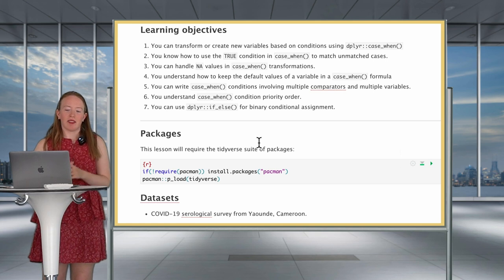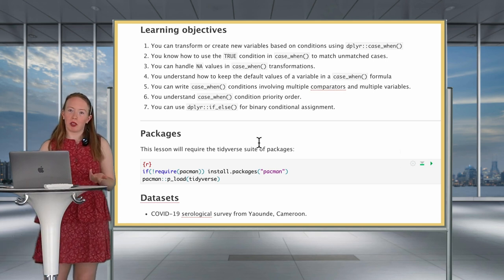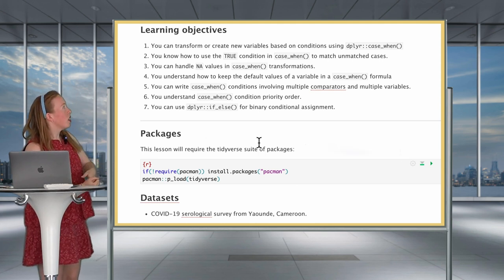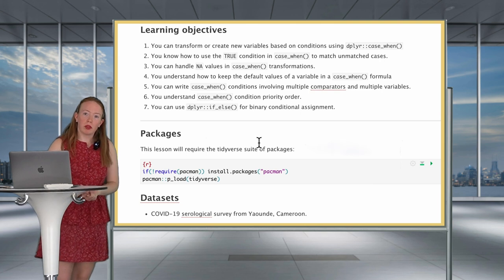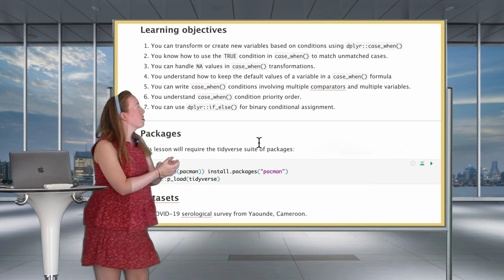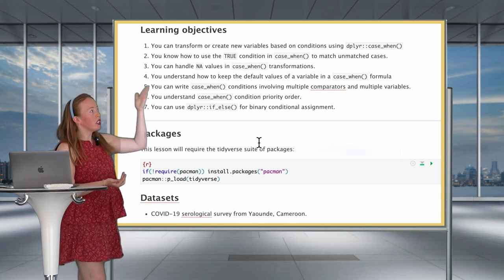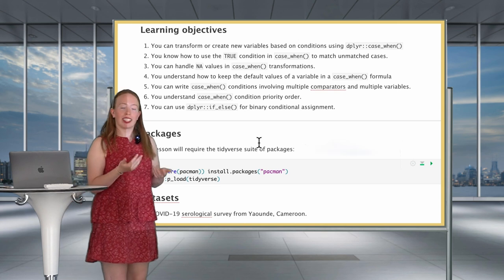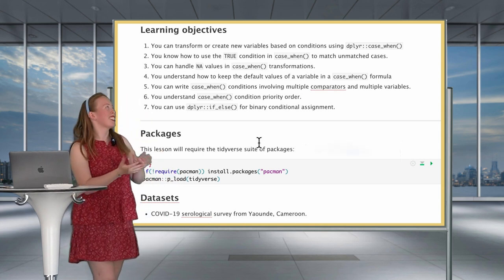Welcome to this lesson. As per usual, we're going to start with our learning objectives. The idea will be that you can transform and create new variables using case_when. Then the idea will be that you know how to use the TRUE condition in case_when to match unmatched cases — this is going to make more sense once we look into it.